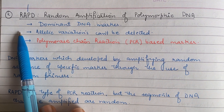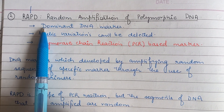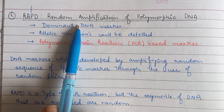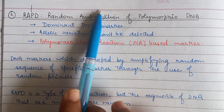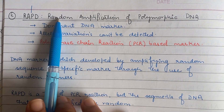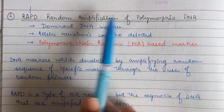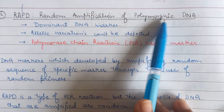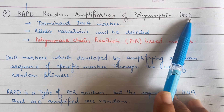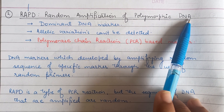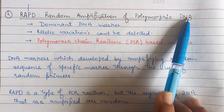RAPD is basically random amplification. Random means choosing any of the sequences of the DNA — we randomly choose any sequence of DNA and then we amplify that sequence. Polymorphic DNA means that a particular sequence of DNA which has two or more variants present in different individuals or in a population.